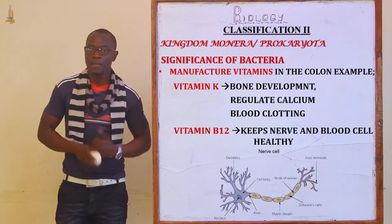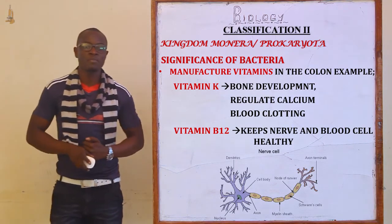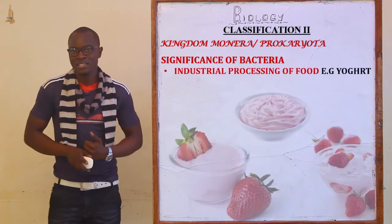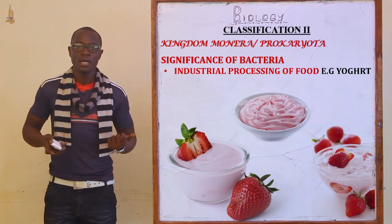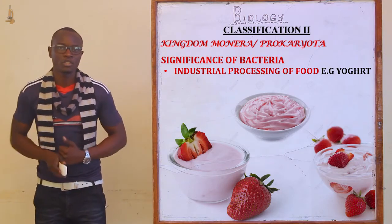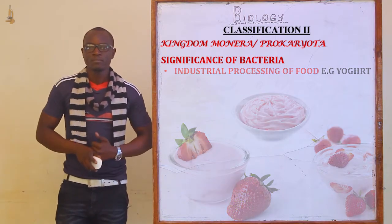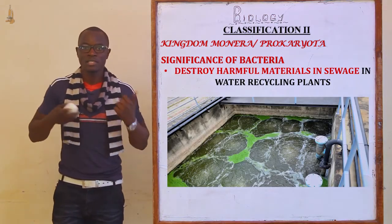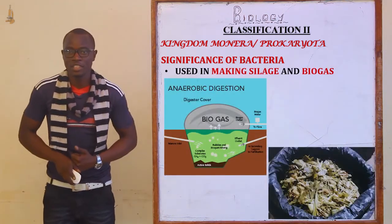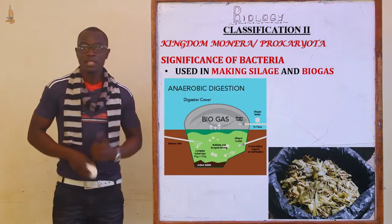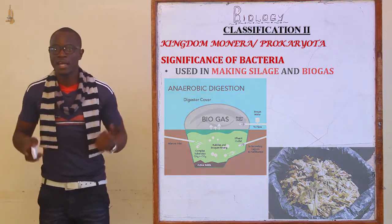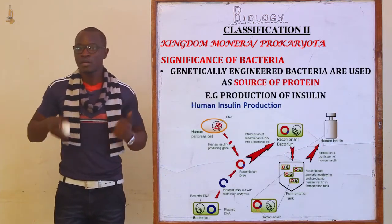Vitamin B12 keeps the nerves and blood cells of the body healthy. Bacteria also facilitate industrial processing of food — for example, yogurt is formed by the fermentation of milk. They are also used in the destruction of harmful materials in sewage at water treatment plants, in making silage and biogas for cooking, and they secrete cellulase to digest cellulose and ligaments in ruminants. Genetically engineered bacteria are also used as a source of protein.